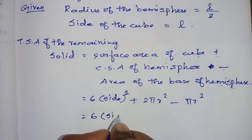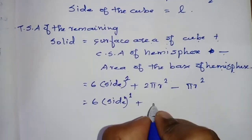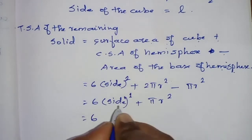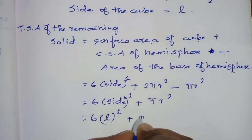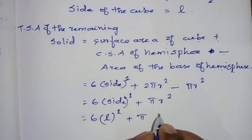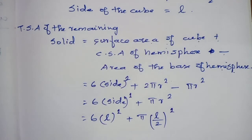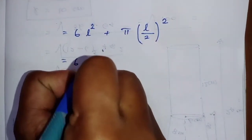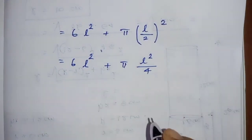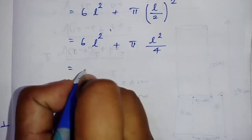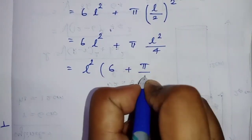So we have 6 times side squared plus 2πr² minus πr², which gives 6L² plus πr². Since the side of the cube equals L and r equals L by 2, substituting: 6L² plus π times (L/2)², which is 6L² plus π times L²/4.